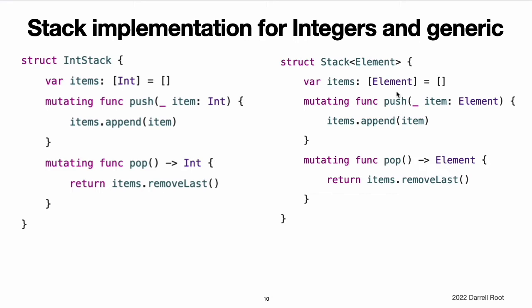First, to create a property called items, which is initialized with an empty array of values of type element. Second, to specify that the push method has a single parameter called item, which must be of type element. Third, to specify that the value returned by the pop method will be a value of type element. Because it is a generic type, stack can be used to create a stack of any valid type in Swift, in a similar manner to array and dictionary.